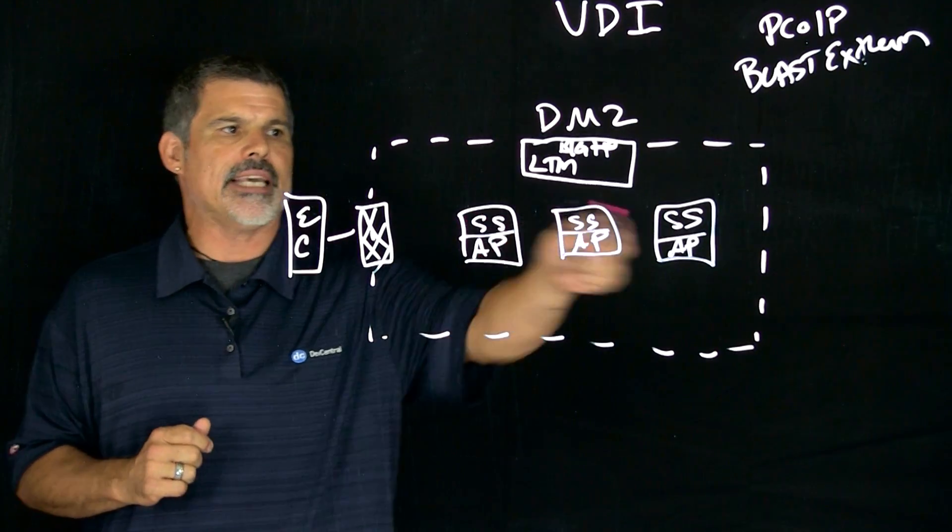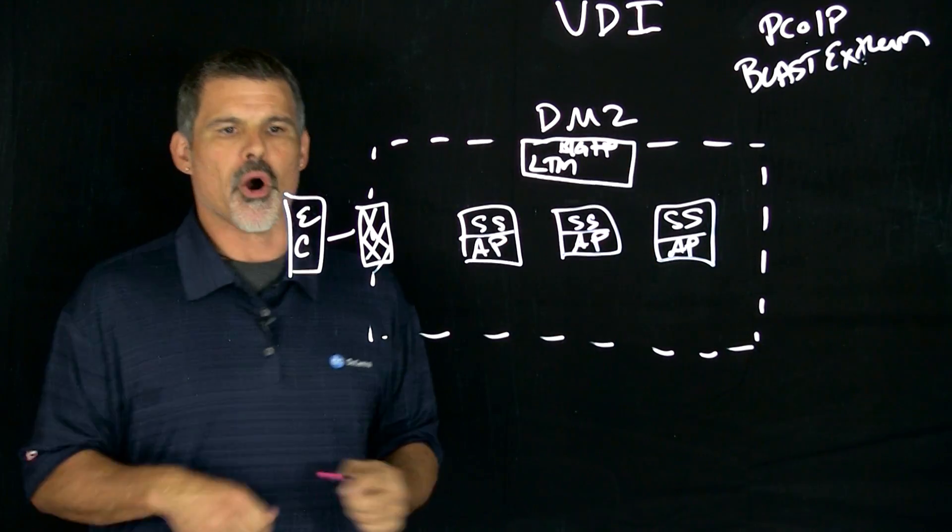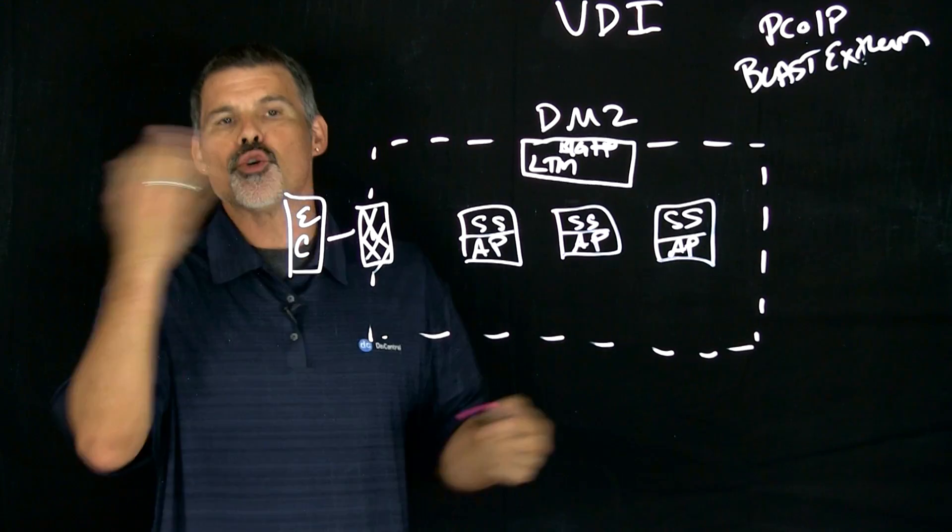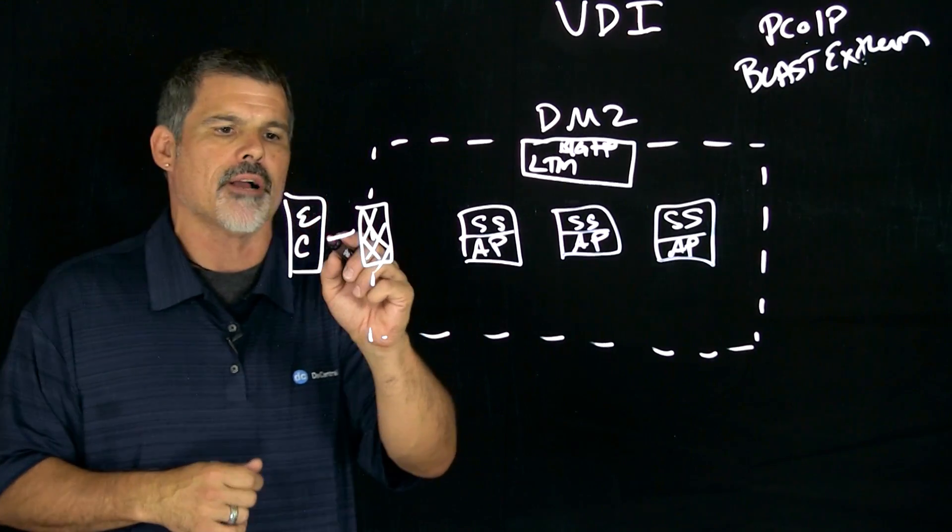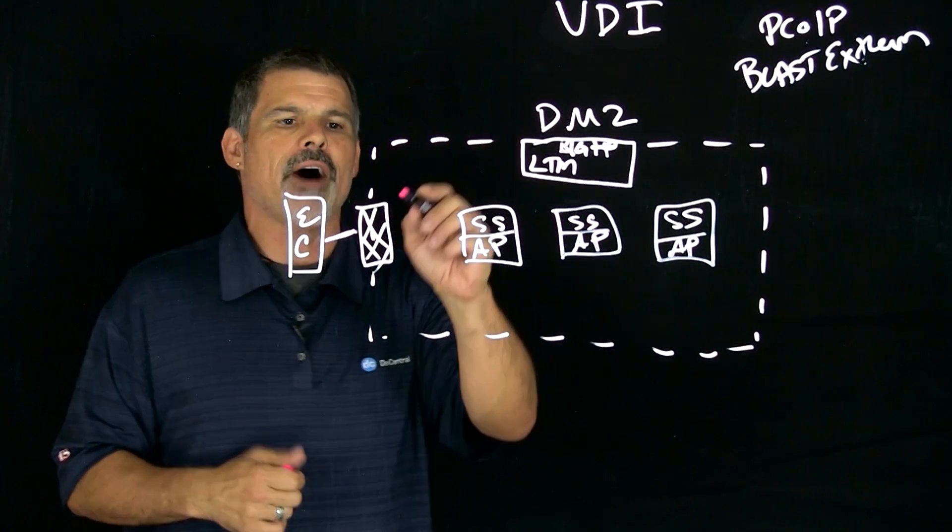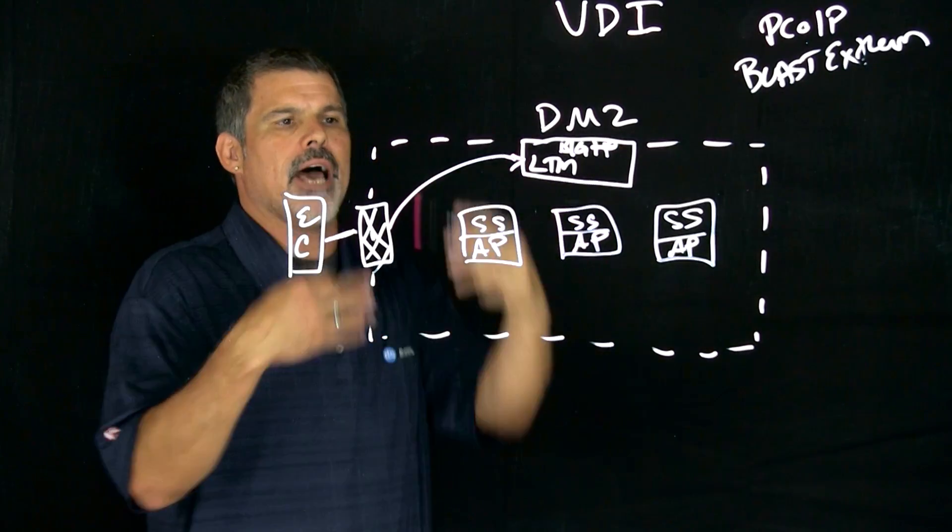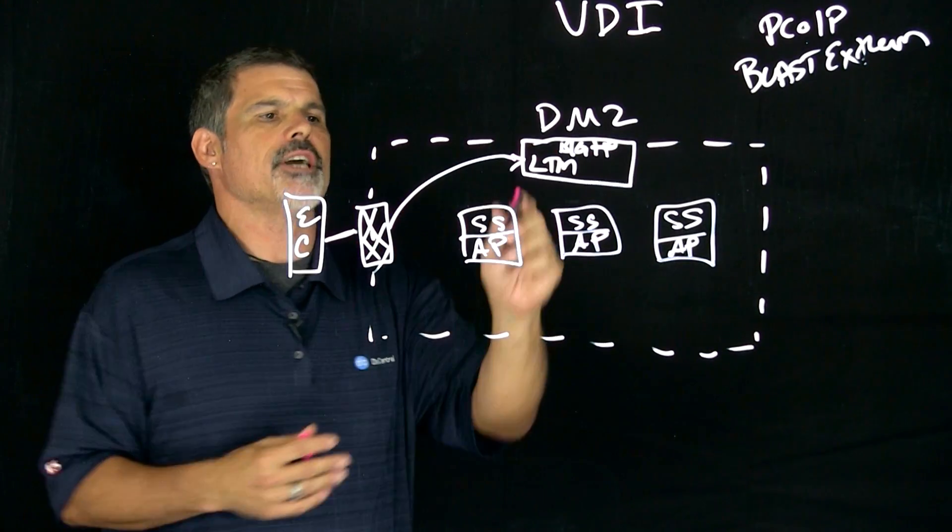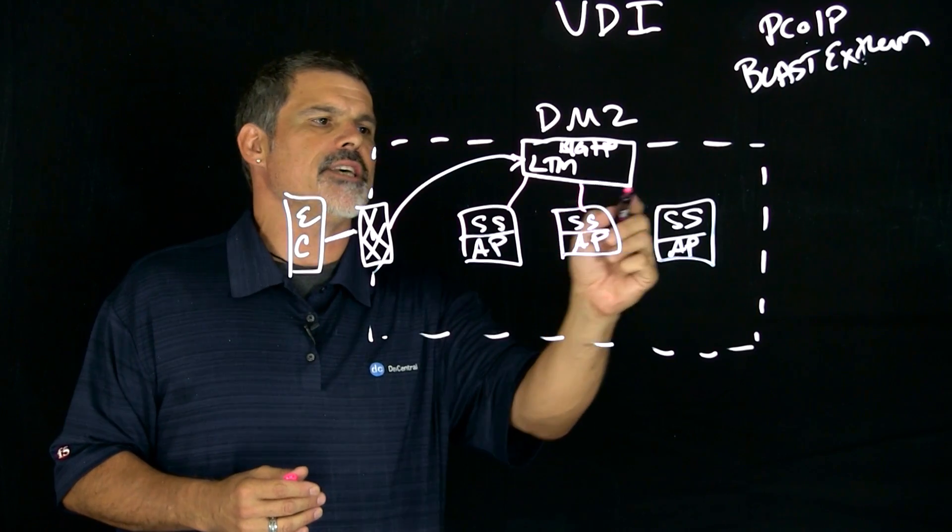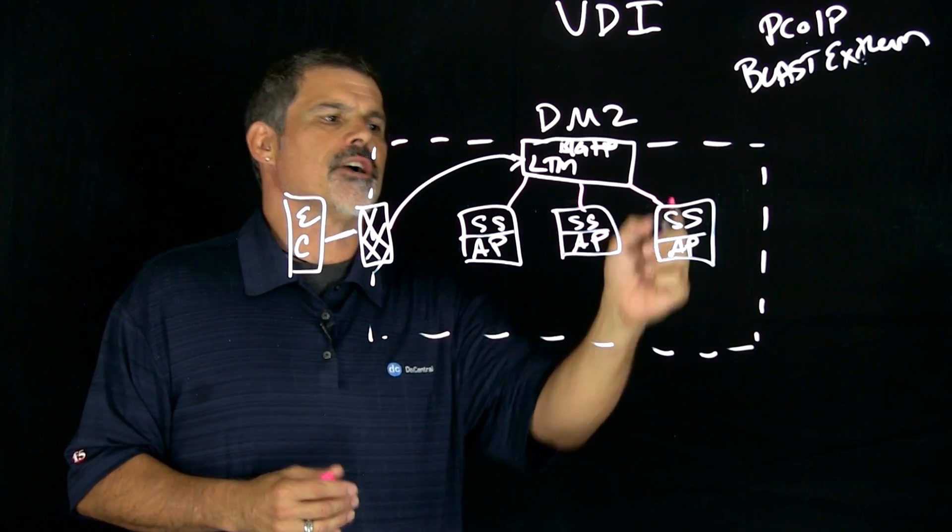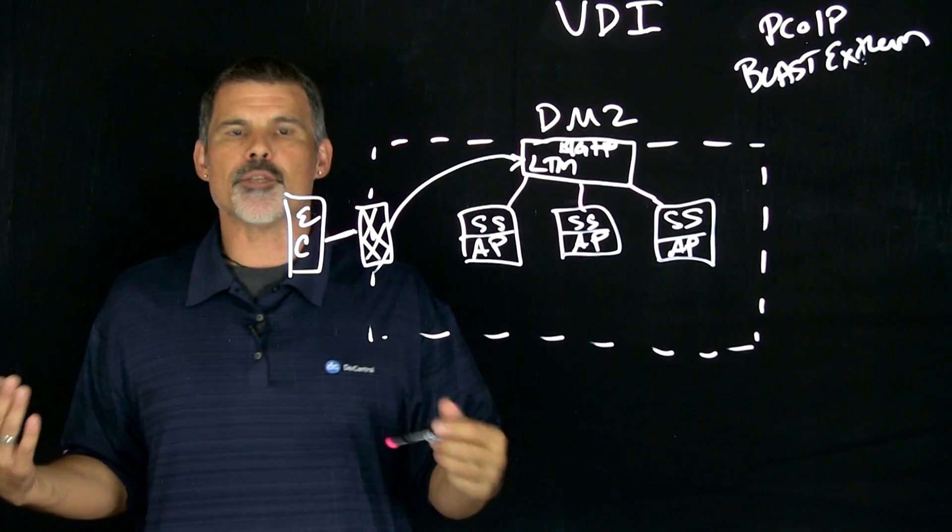When there's a virtual desktop request made, the external client comes in, hits the firewall, hits the Big IP LTM, and then the local traffic manager does what it does. It load balances these security servers slash access points.